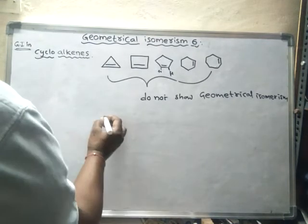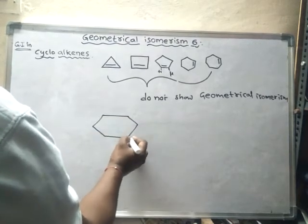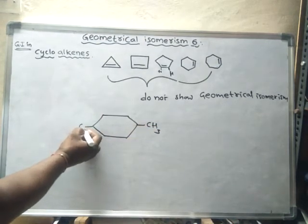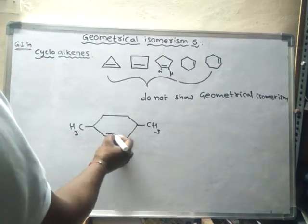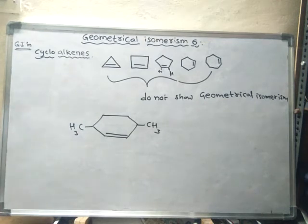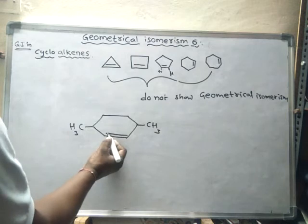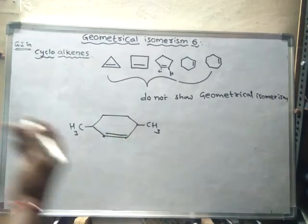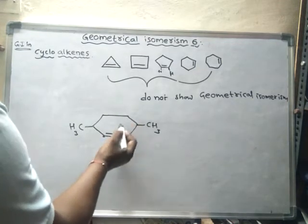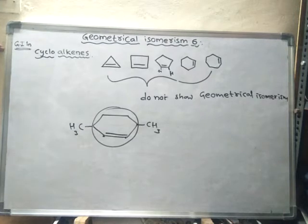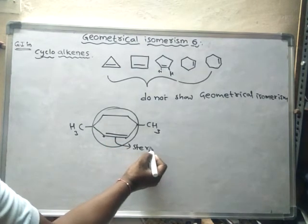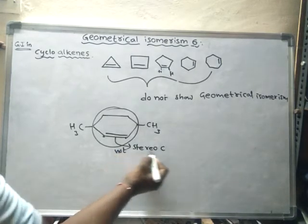Consider a compound with a six-membered ring. It is a six-member ring, meaning less than eight members. Hence this alkene does not show geometrical isomerism — no geometrical isomerism — because the double bond carbon is not a stereocenter. Geometrical isomerism requires a stereocenter, but here it is not possible since it is a six-member ring only.